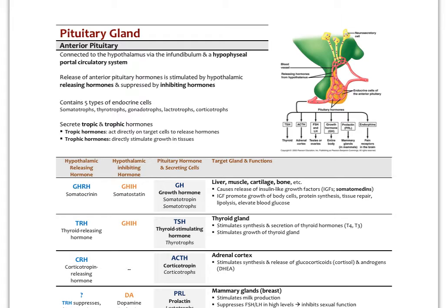The anterior pituitary is connected to the hypothalamus via the infundibulum and has its own little portal circulatory system. Blood vessels come in around the base of the hypothalamus, neurons there project and send their hormones down — made inside the neurons and released just like neurotransmitters at synapses — into the portal system, which circulates down the infundibulum and stimulates the anterior pituitary cells to release the actual pituitary hormone. So we have a hypothalamic releasing hormone, and then the actual anterior pituitary hormone is released.